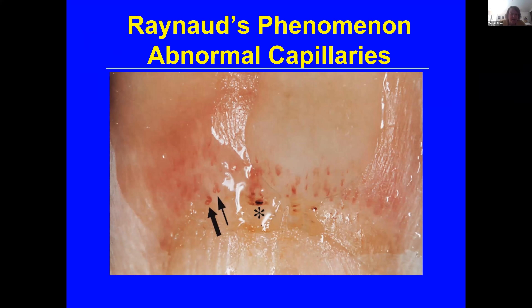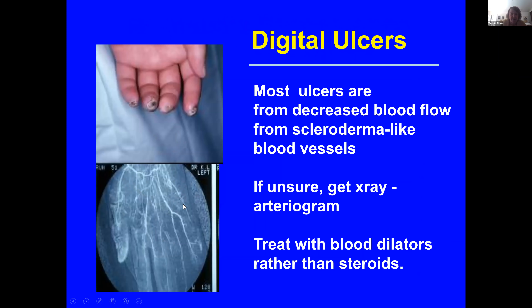Another interesting phenomenon is these nail fold capillaries. Many of you have had your rheumatologist look at your nails, wondering what they're looking at. These are little tiny capillaries right at the base of the nail bed. We look at these with a little magnifying glass and try to find whether you have dilated capillaries, corkscrew capillaries, or loss of capillaries — very typical features that occur in scleroderma, can occur in myositis, and certainly can occur in mixed connective tissue disease. Digital ulcers can be very severe, and patients with lupus can have digital ulcers as well, usually from inflammation in the blood vessels.